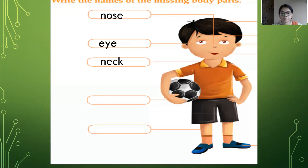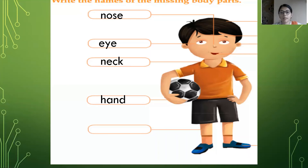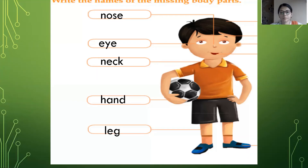Now let's see the next one. The next one is pointing towards the hand, so write the answer hand: H-A-N-D, hand. And the last picture on this side — the answer is leg: L-E-G, leg. So this side everyone has completed.